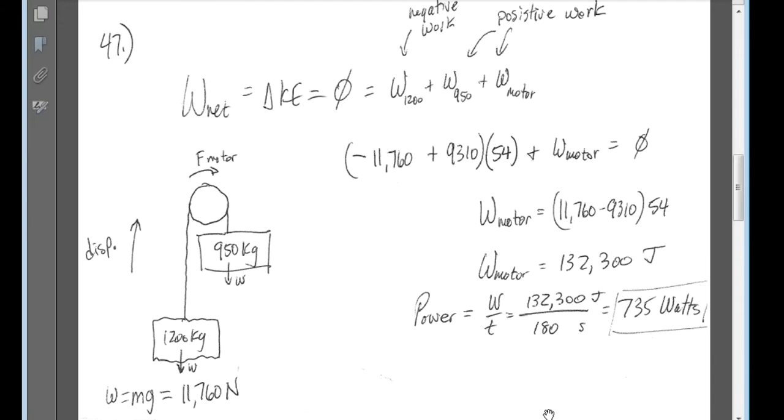All right, number 47. A fully loaded, slow-moving freight elevator has a cab with a total mass of 1,200 kilograms, which is required to travel upward 54 meters in three minutes, starting and ending at rest.